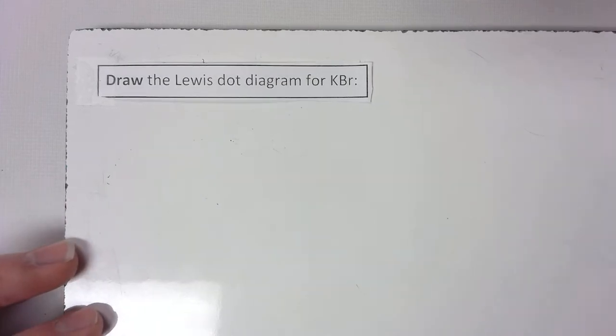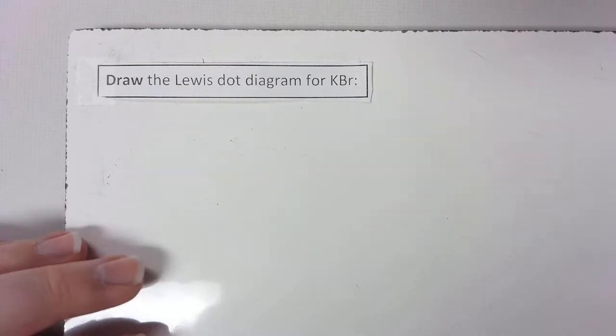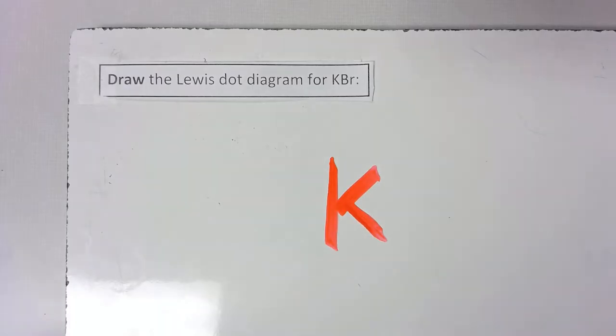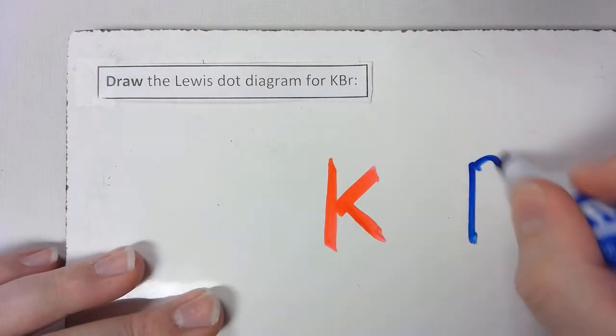To draw a Lewis dot diagram for potassium bromide, or KBr, the first thing you want to do is draw the symbols for the elements. So in this case, K and Br, and we're going to draw them side by side.